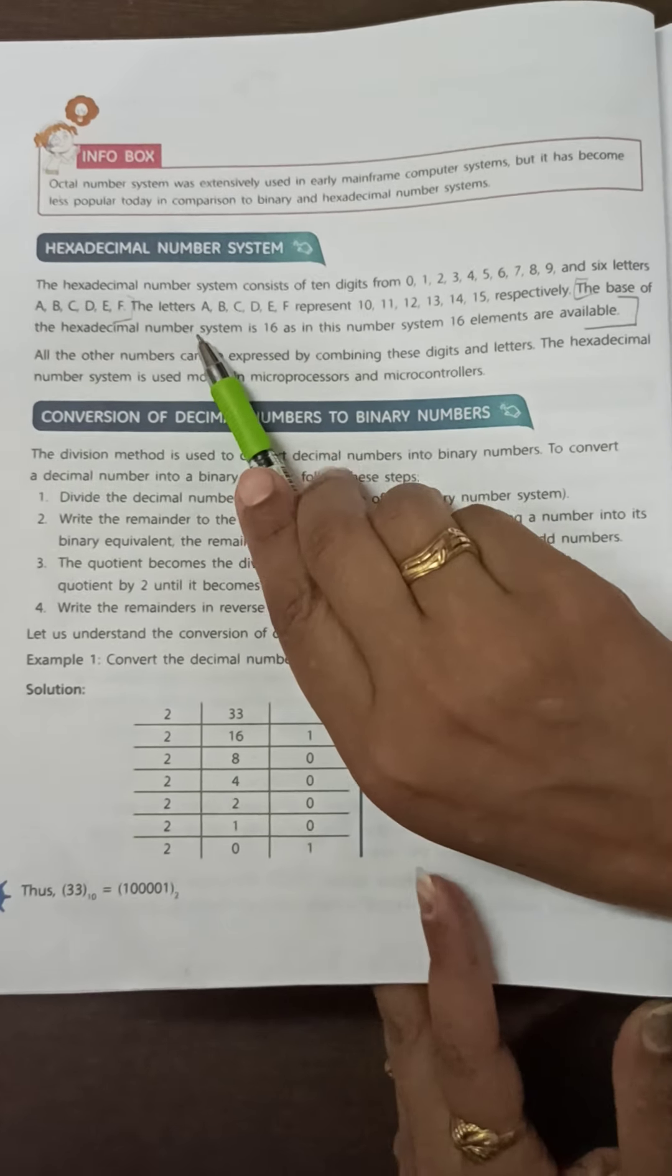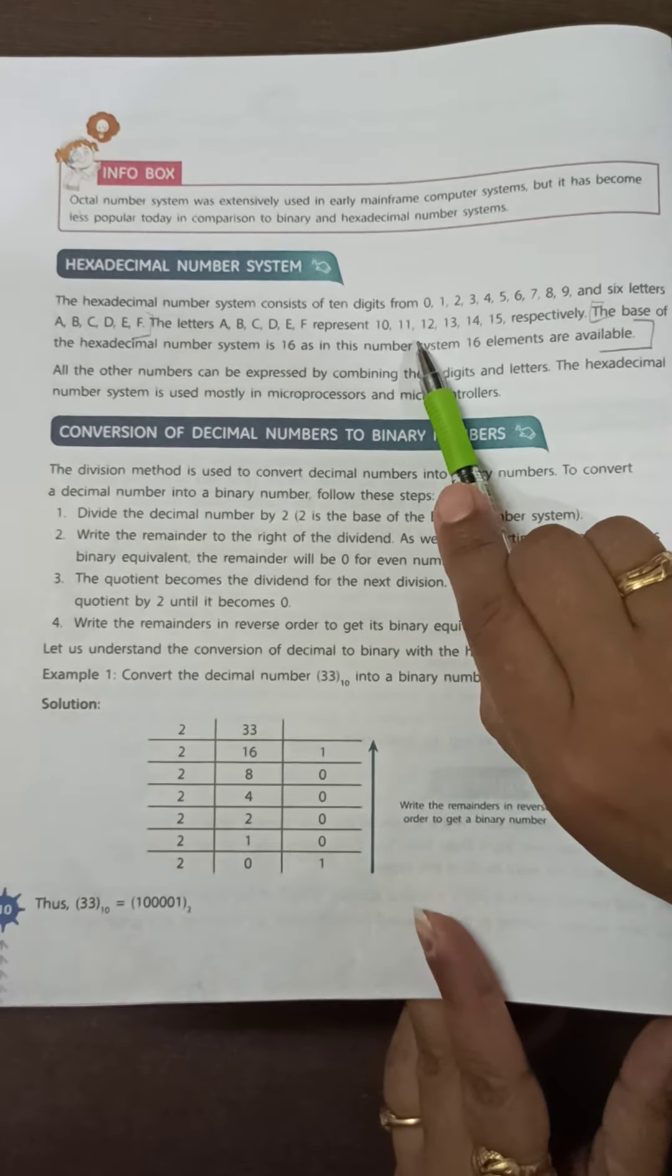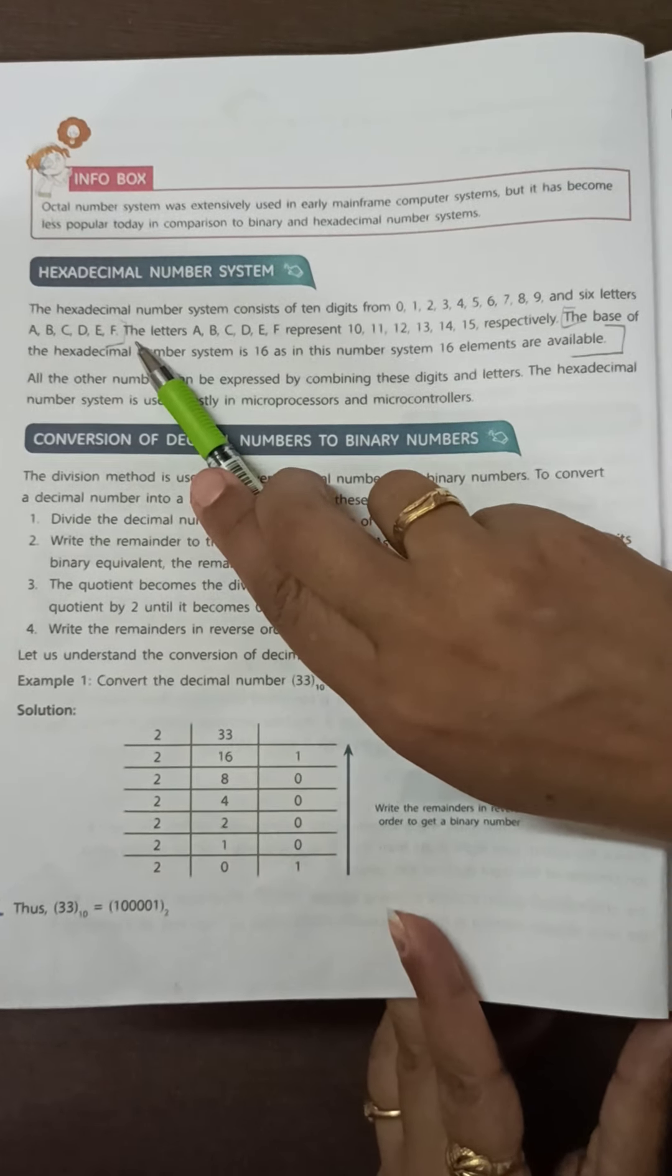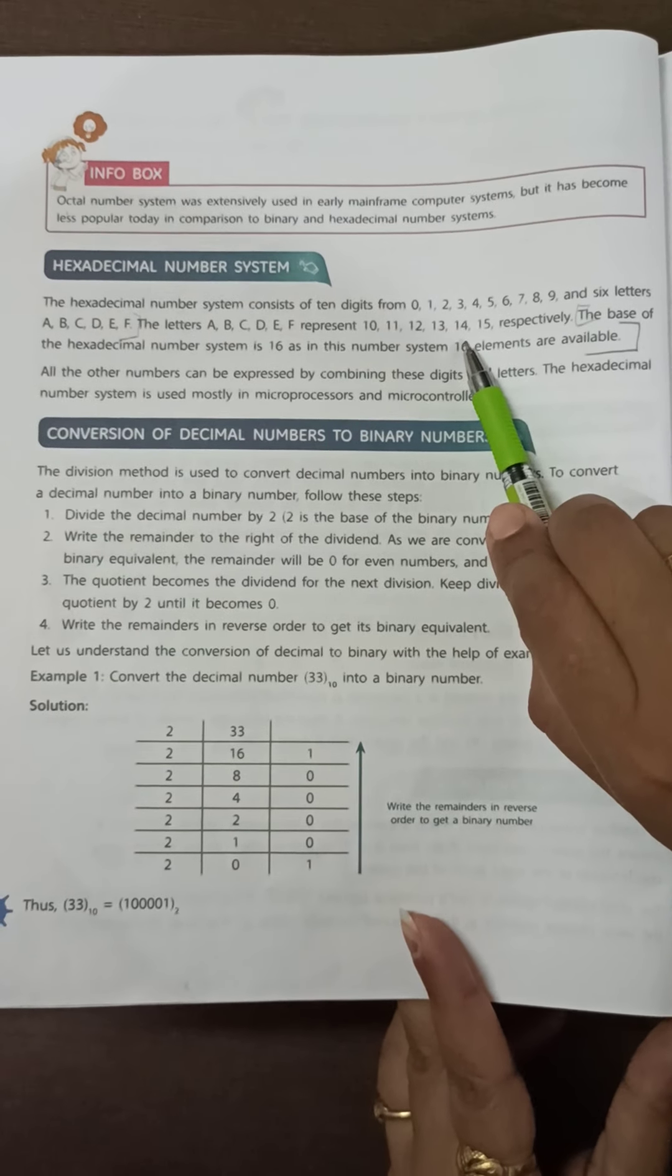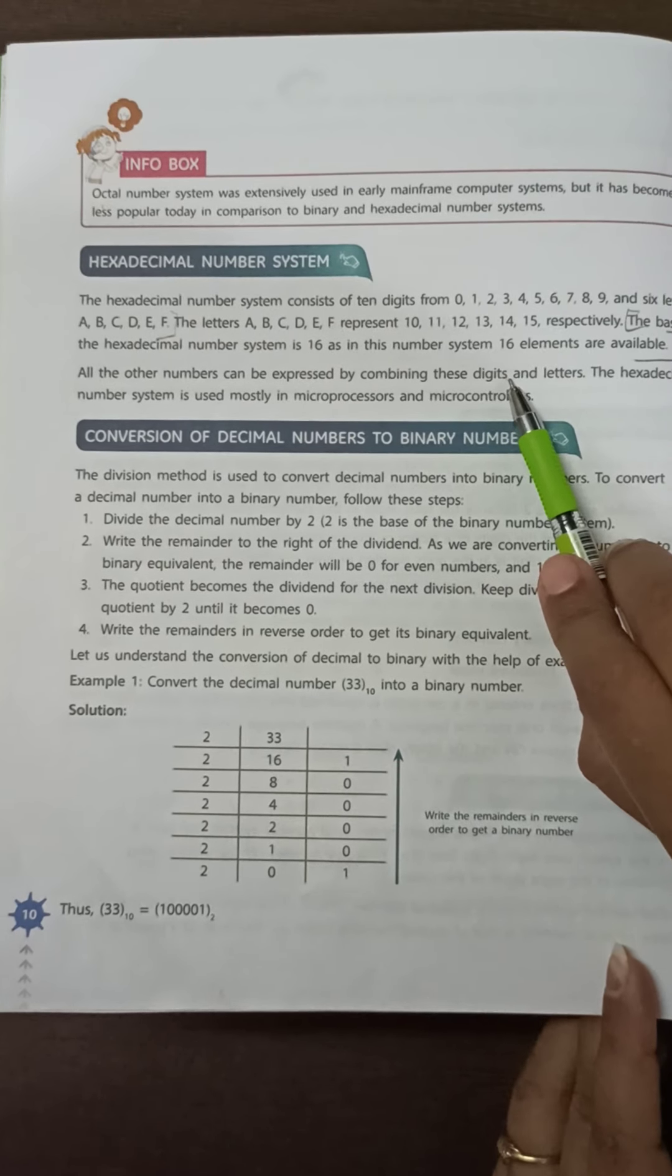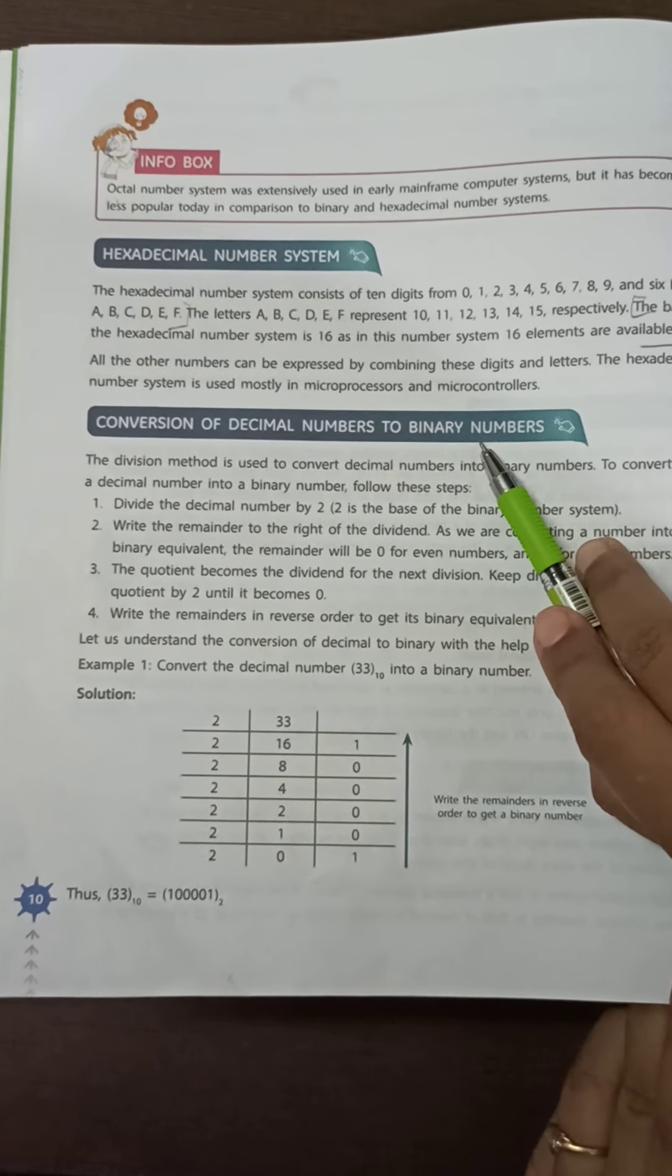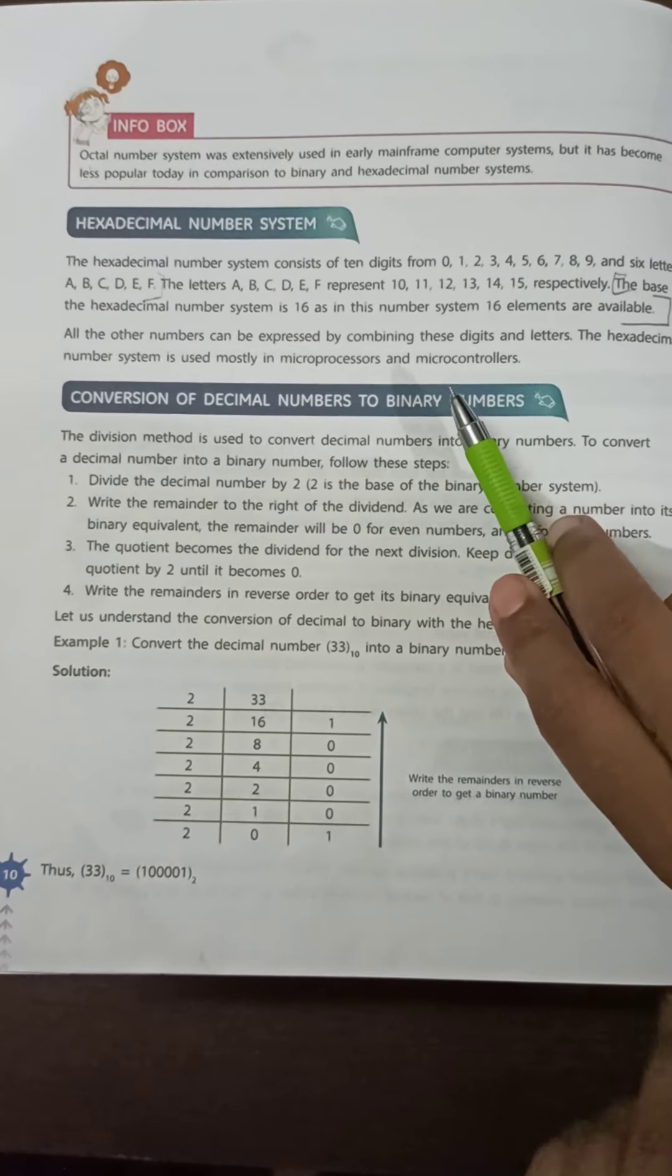The next one is hexadecimal number system. The hexadecimal number system consists of 10 digits, 0 to 9, and 6 letters, A to F. The total number of elements in hexadecimal is 16. The base of hexadecimal number system is 16. In this number system, 16 elements are available. Hexadecimal number system is used mostly in microprocessors. Thank you.